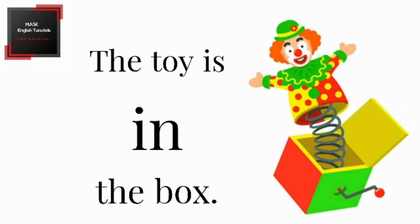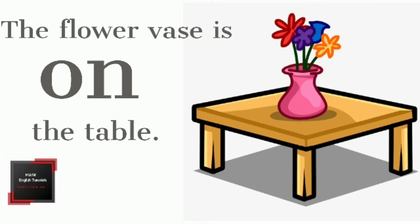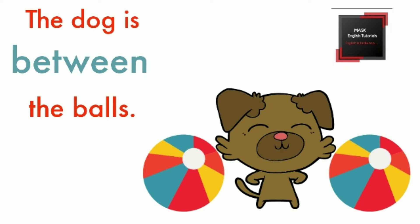First, 'in' means to refer to a position that is an enclosed space. Example: the toy is in the box. Second, 'on' means to refer to a position that is a surface of something. Example: the flower vase is on the table. Third, 'between' means to stay in the middle with two on the sides. Example: the dog is between the balls.